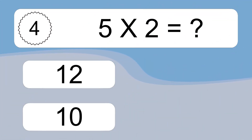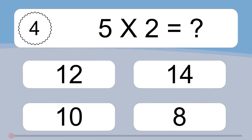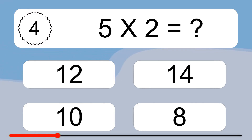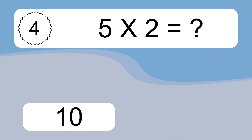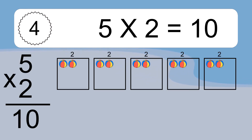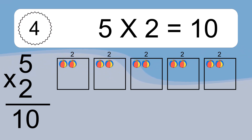Five times two equals what? Five times two equals ten. We have five boxes, and each box has two colorful balls inside. If you count all the balls in all the boxes together, you will have five times two balls. This equals ten balls.